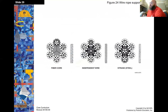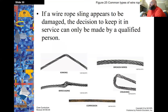Wire rope supporting cores include fiber core, independent wire, or stranded steel core. If a wire rope sling appears to be damaged, the decision to keep it in service can only be made by a qualified person. Remember from the safety chapter, OSHA uses the term 'qualified person' quite a bit — it's their go-to for these situations.